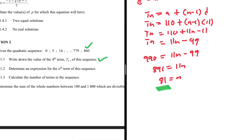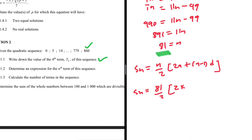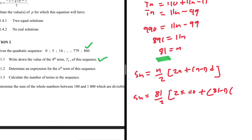Now we can calculate the sum: SN = (n/2)(2a + (n - 1) × d). So S81 = (81/2)(2 × 110 + (81 - 1) × 11). Putting that into the calculator gives us 44,550.